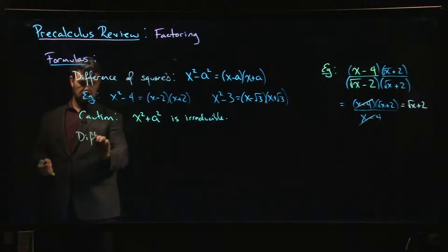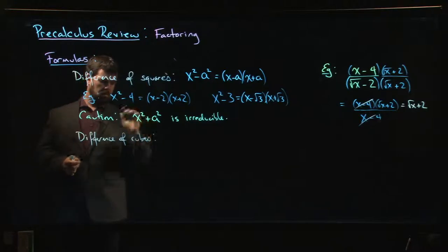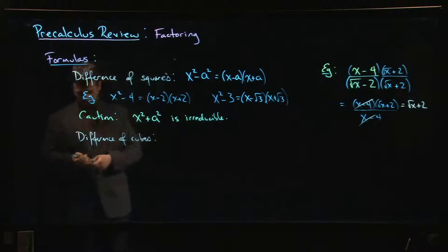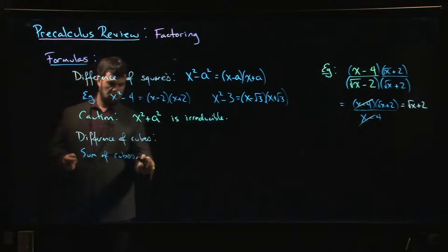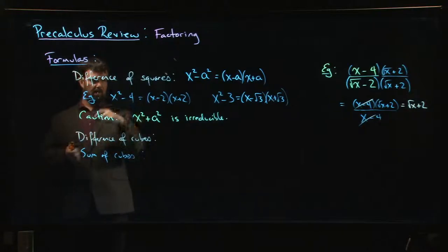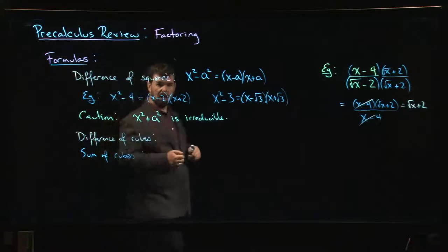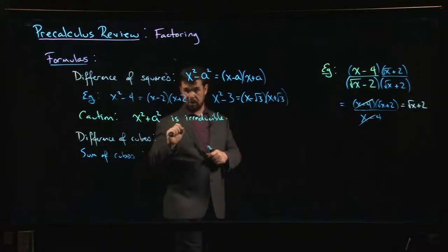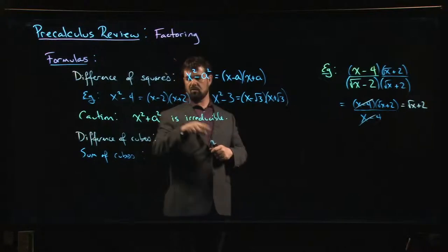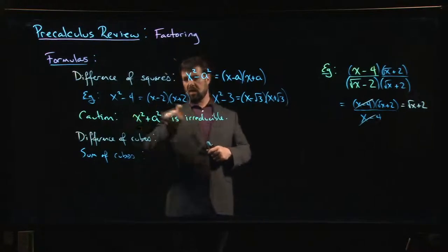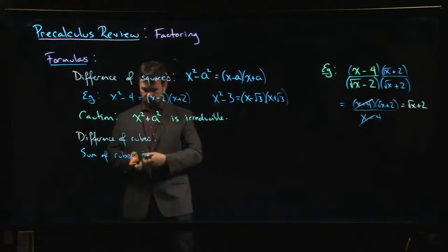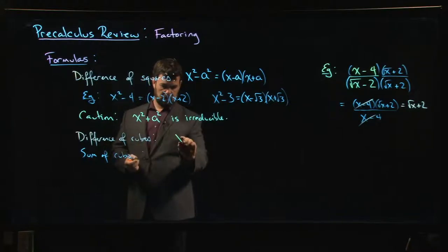Now what about difference of cubes? Turns out you can do a difference of cubes and you can also do sum of cubes. Unlike sum of squares where you can't factor sum of squares, you can factor a sum of cubes. The reason is that you can take the cube root of a negative number. If I set this equal to 0 and tried to solve, I'd have a negative on the other side. I can't take the square root, but I can take the cube root of a negative.